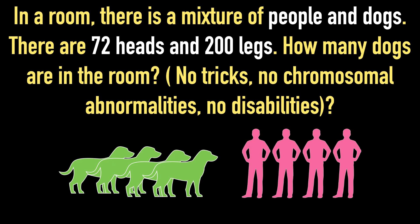Welcome to Simply Logical, this is Vengdesh. In a room, there is a mixture of people and dogs. There are 72 heads and 200 legs. How many dogs are in the room?